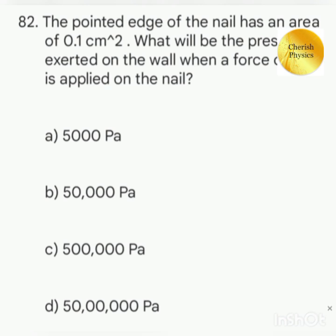The pointed edge of the nail has an area 0.1 centimeter squared. What will be the pressure exerted on the wall when a force of 5 newton is applied on the nail?